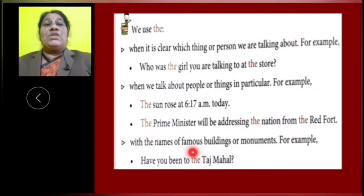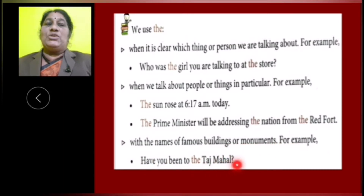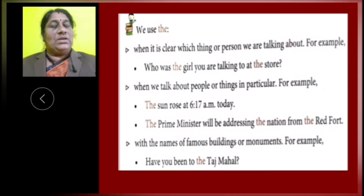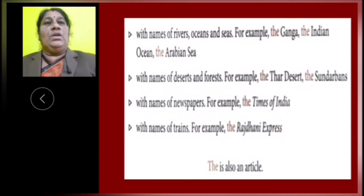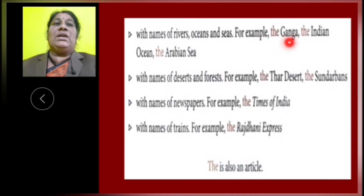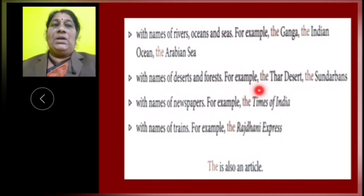We use THE with the names of famous buildings or monuments. For example, 'Have you been to the Taj Mahal?' Taj Mahal is a monument, and with monuments we have to use the article THE. We also use THE with names of rivers, oceans and seas — for example, the Ganga, the Indian Ocean, the Arabian Sea. And with names of deserts and forests — for example, the Thar Desert, the Sundarbans.